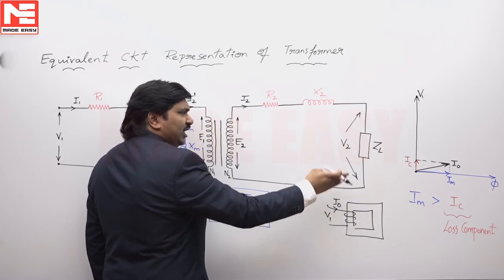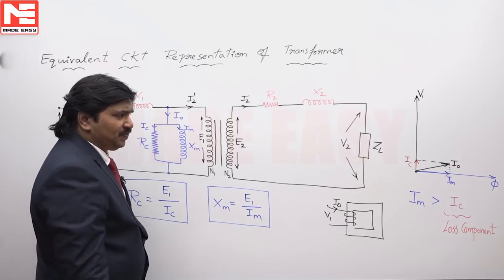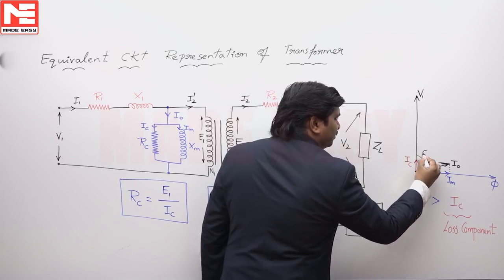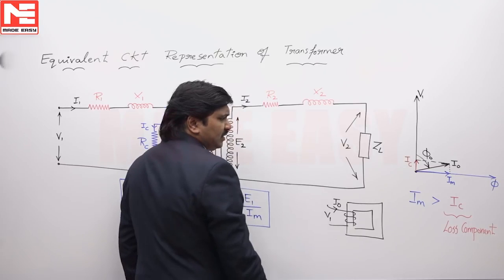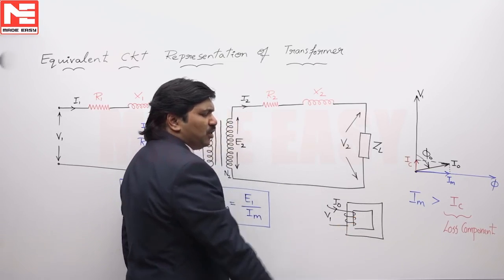This I naught is not in phase with V, this I naught is not lagging with V, but this will be something like this with a big angle phi naught. Practically, we know transformer losses are very, very small.